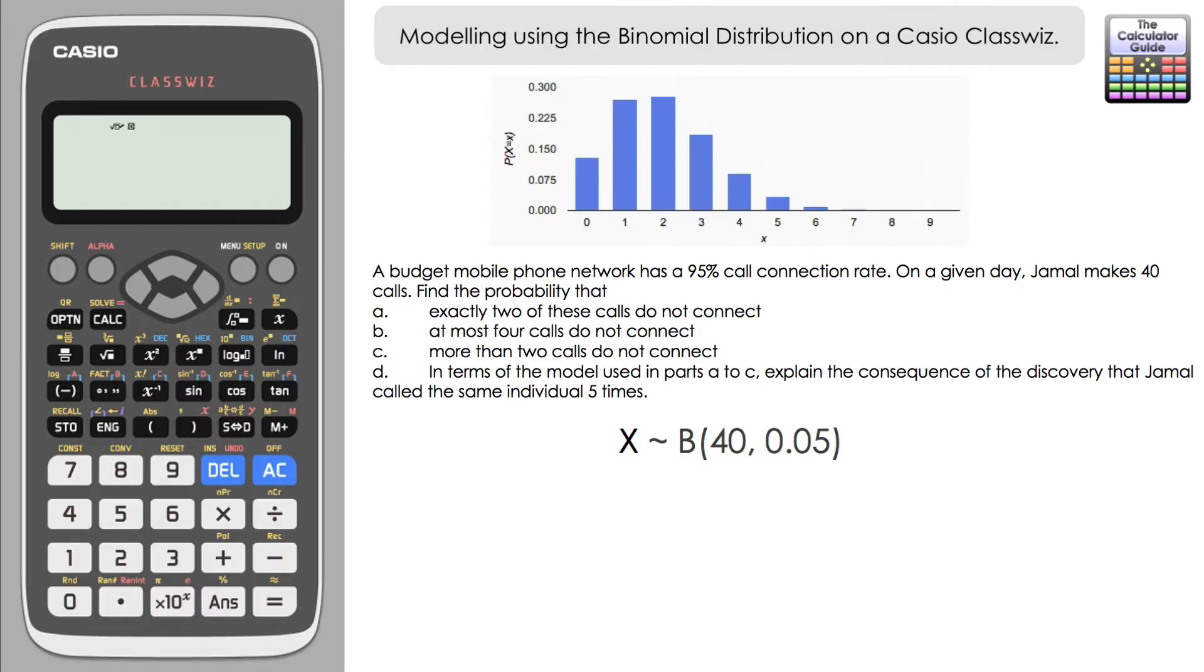And because if we look at the questions, they focus mainly on the calls not connecting, do not connect. And if you think about the probability of a connection is 95% or 0.95, so the probability of not connecting is 1 minus 0.95 or 0.05. And that's what I'm going to use in the model as my p-value, 0.05.